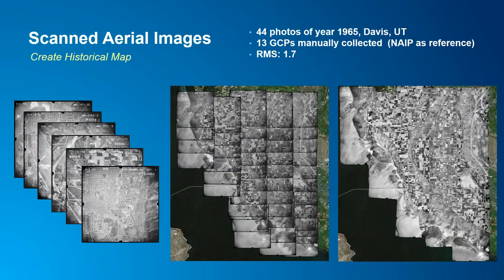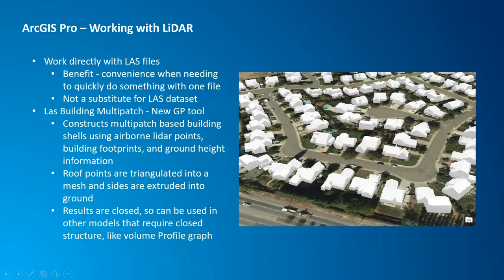Here are some examples of what you can really do in Pro. This example is from Davis, Utah — they had a number of different aerial images and were able to use ArcGIS Pro to create a seamless aerial view. We also work really well with LiDAR data — I hear a lot more about people starting to use LiDAR now, and there are some really great tools for working with LiDAR in Pro.